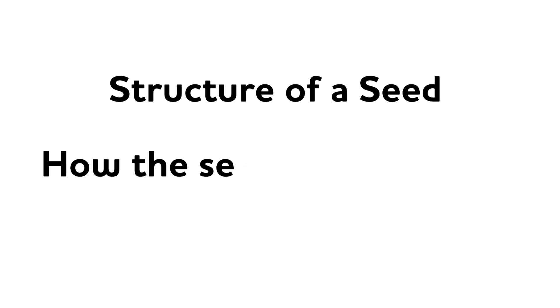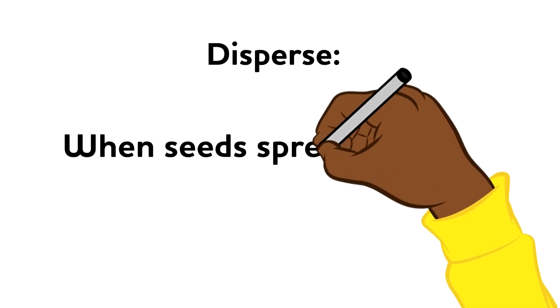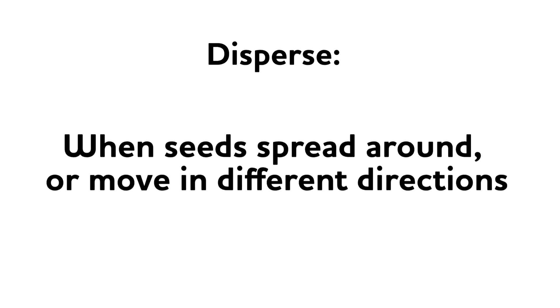Now the first thing you're probably wondering is, what is a structure? When we're talking about the structure of a seed, we mean how that seed is organized or how it is built. Another important word for us today is disperse — that's what we call it when a seed spreads around or moves in different directions. So today we're going to see how the structure of a seed, how it's built, can sometimes affect how the seed disperses or spreads around.